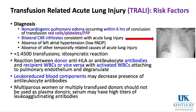The antibodies can come from the patient receiving the transfusion or from the donor, and white blood cells can come from either as well. An antibody binds to a white blood cell, activating it; the white blood cell degranulates, damaging the pulmonary endothelium, causing leaky membranes and the whiteout of both lungs. White blood cell reduction, performed in many transfusion centers, may decrease the risk. Multiparous women or multiply-transfused donors should not be used as plasma donors because their serum may have high titers of leukoagglutinating antibodies.